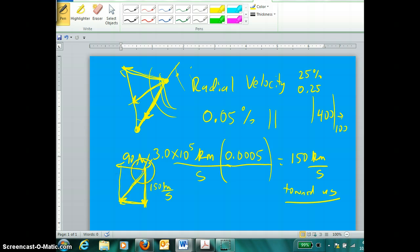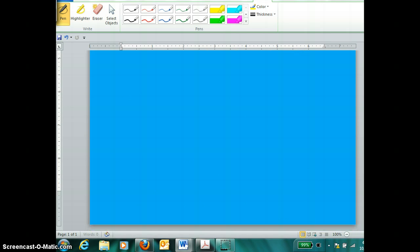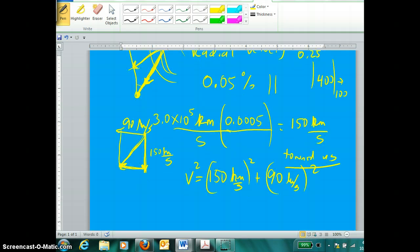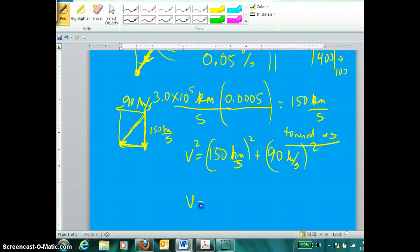So yes, in this example, were these the transverse and radial velocities of some star, I could say that the true velocity, the space velocity of the star, squared, had to equal 150 kilometers per second all squared, plus 90 kilometers per second all squared. And just a little bit of calculating, that means if we want the velocity, we can take the square root of 150 squared plus 90 squared.